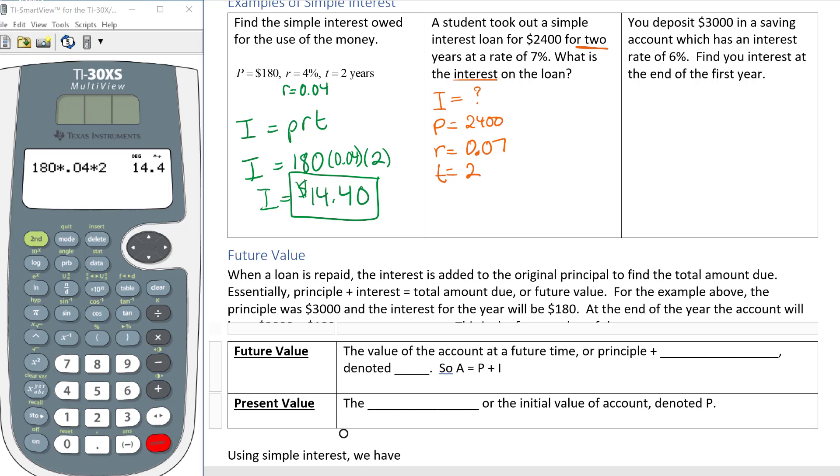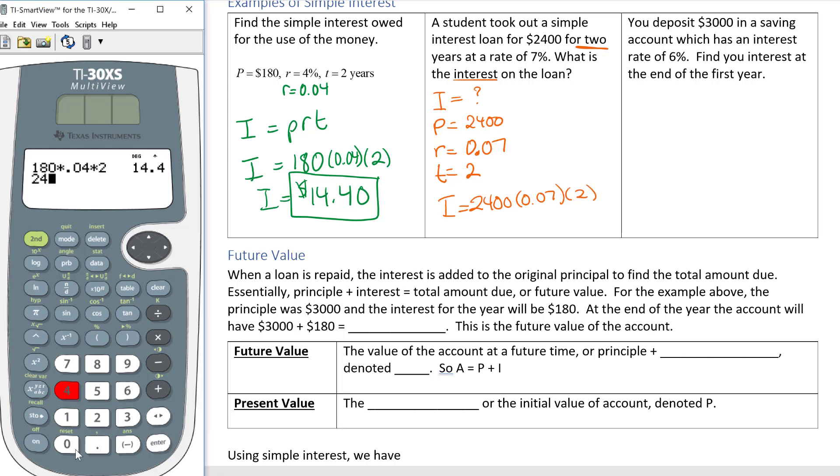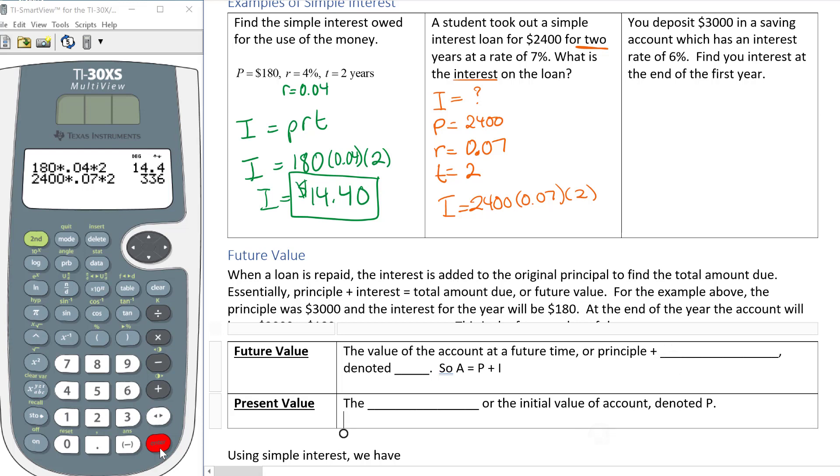When I plug this in I'm going to get I equals P which is 2400 times my rate which is 0.07 times my time which is 2. Go to my calculator, 2400 times 0.07 times 2 and that turns out to be $336 of interest, which is a whole lot more because we started with a whole lot more money. Plus my interest rate is higher so we're going to accrue more interest.